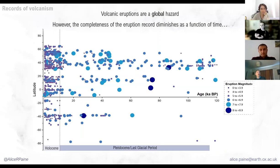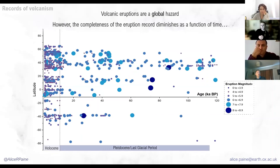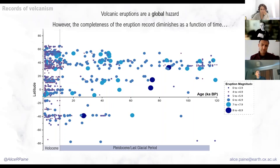Volcanic activity is frequent, and you can see here every dot represents an eruption, with the size corresponding to the magnitude. As we move back in time, our records of these eruptions become really quite sparse. This owes to a lot of different factors, such as erosion of deposits and sea level rise. For example, if you have a caldera that's erupted, you may during glacial-interglacial cycles have sea level rise that actually masks that caldera, and you may only discover it if you do sea floor surveys.